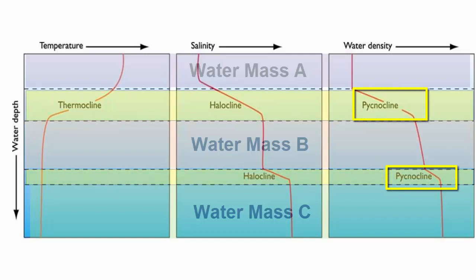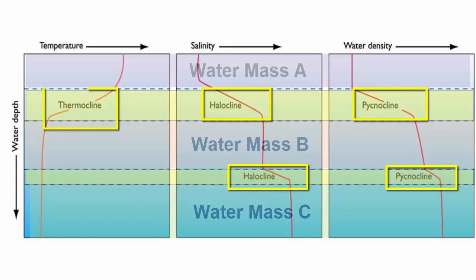What causes the density differences? Between the top and middle layer, salinity increases — the same is true between the middle and lower layer. Because salinity changes at each boundary, these pycnoclines are also called haloclines. Looking at temperature, it decreases between the top and middle layer, but there's no change between the middle and bottom layer. Because temperature changes at the first boundary, that pycnocline and halocline is also a thermocline. However, the middle and bottom layers are isothermal, so there's no thermocline between them.